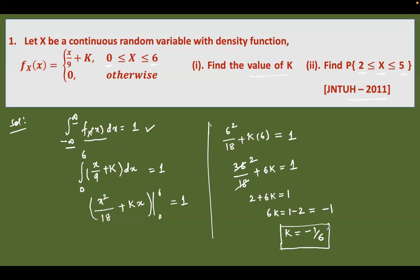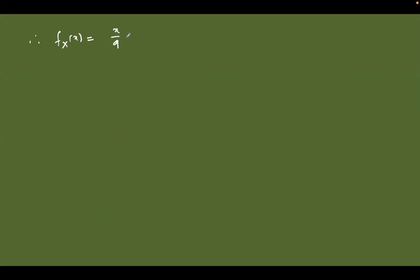We can substitute the value of k back into the given function. Therefore the probability density function f(x) = x/9 − 1/6, defined for 0 ≤ x ≤ 6, and 0 otherwise. This is the modified probability density function.